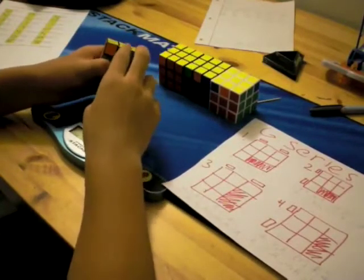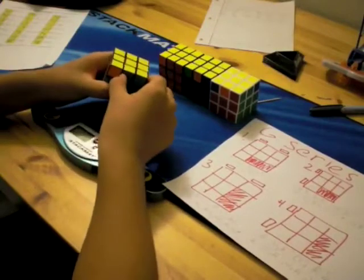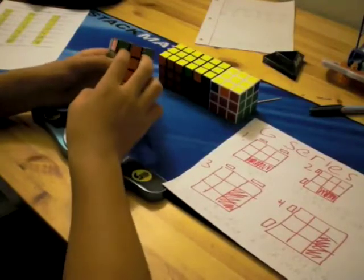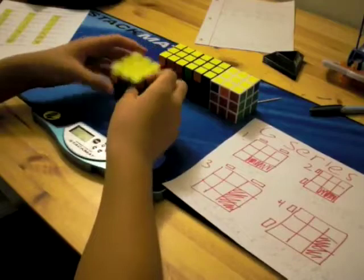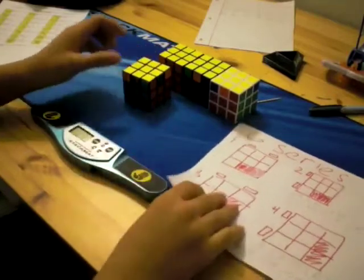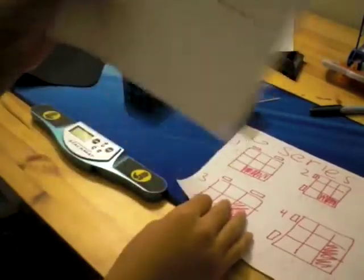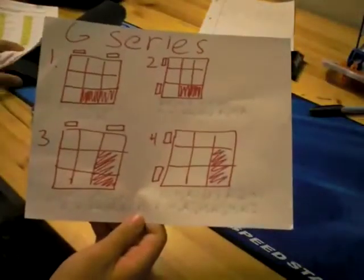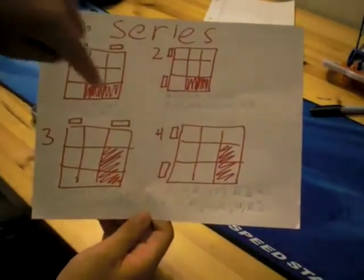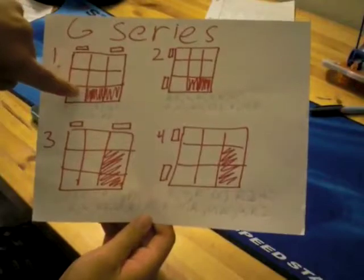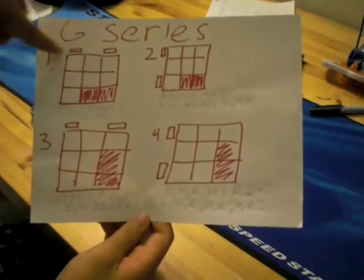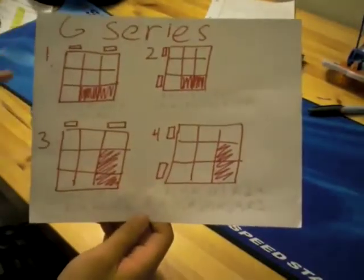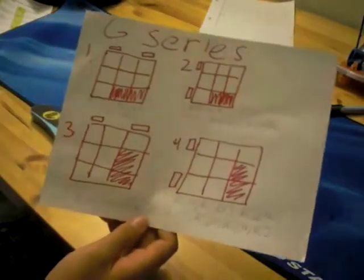One is a 1x1x2 block and then headlights somewhere on the top layer. I simplified this where we have the 1x1x2 block and then we have headlights. And these are all of the G-series algorithms.